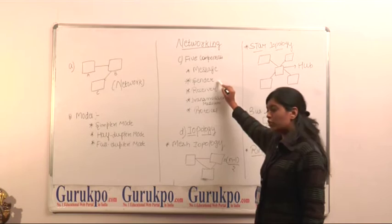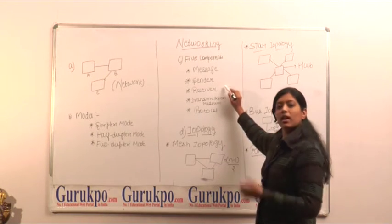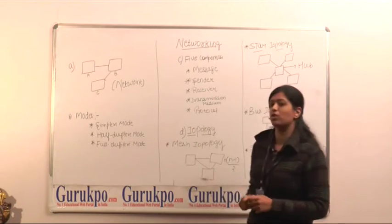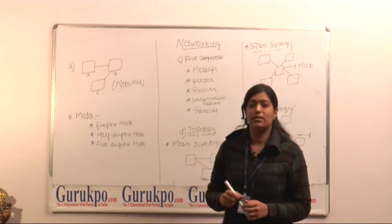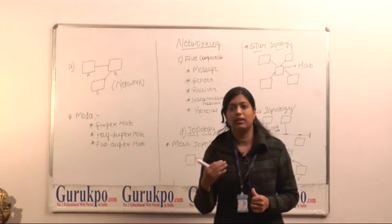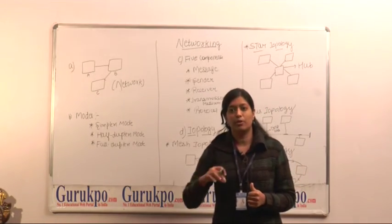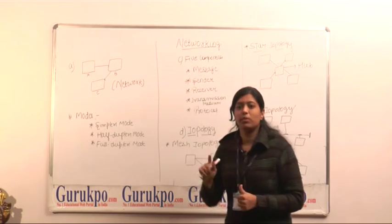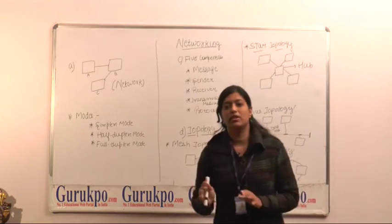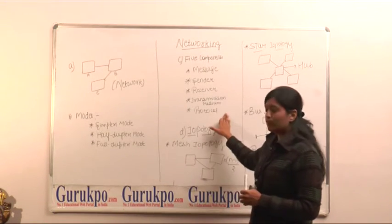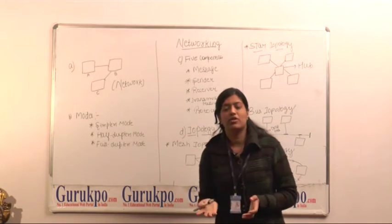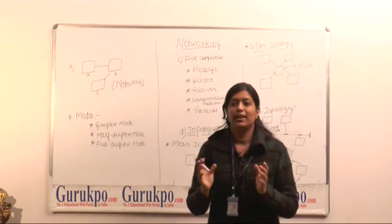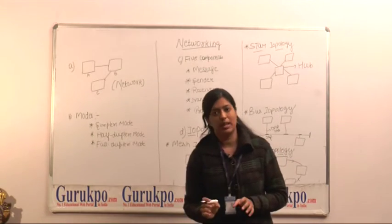The sender is who is sending the message. The receiver is who is receiving the message. Transmission medium is the important component — it means the path through which the message travels. Like if we are walking on the road, then the road is the transmission medium. Similarly, the transmission medium is what our data travels through between sender and receiver. The protocol is a set of rules and regulations that both parties agree on — a common rule on how they are going to communicate.